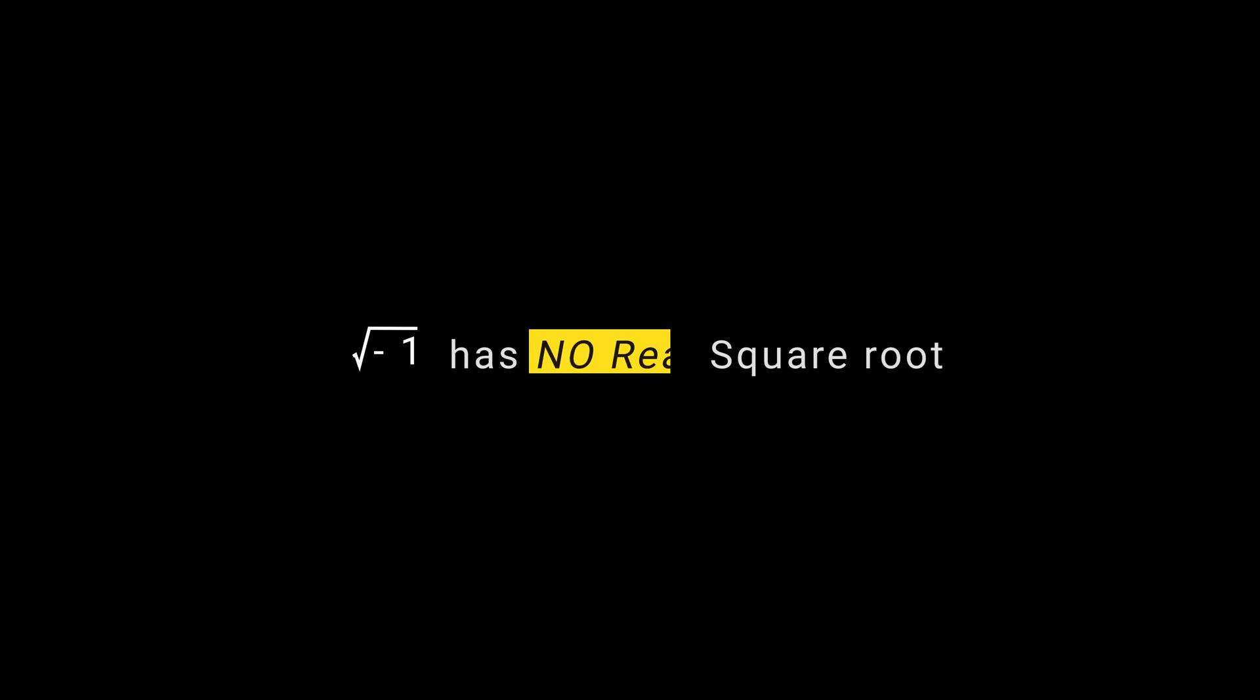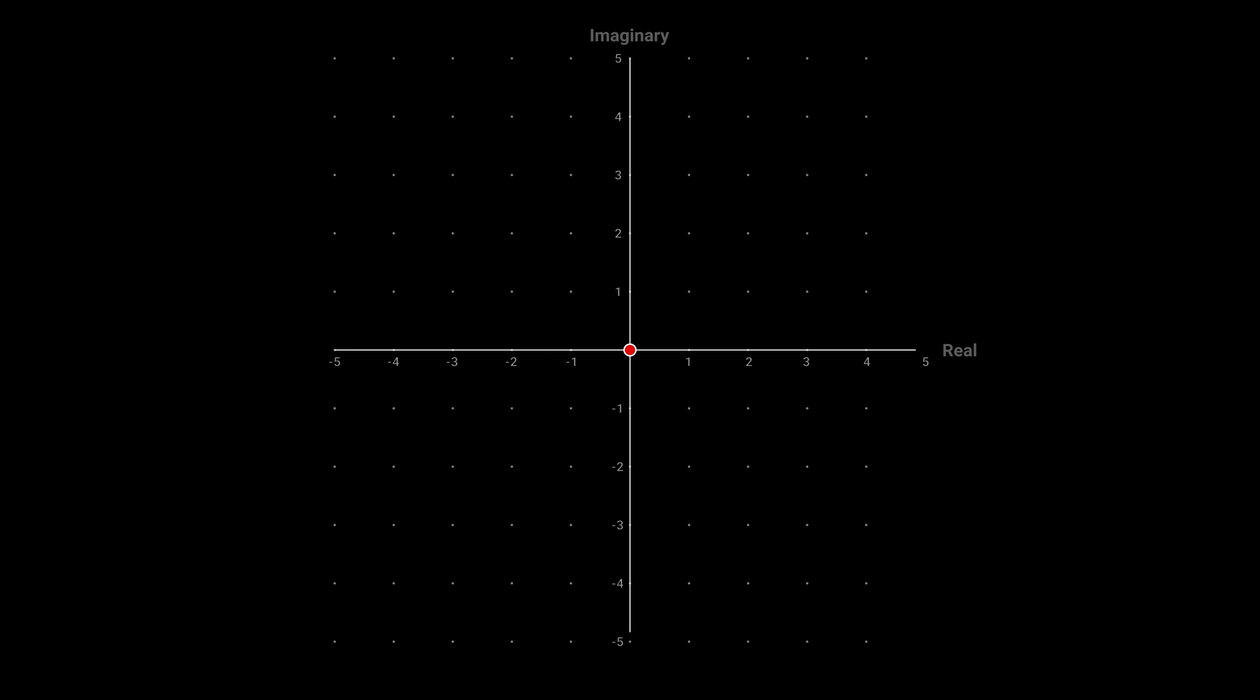We know that negative number has no real square root. Because a negative number squared is always positive, its square root must be imaginary. The square root of negative 1 is an imaginary number. This is complex plane. Instead of x and y axis, we have real and imaginary axis.